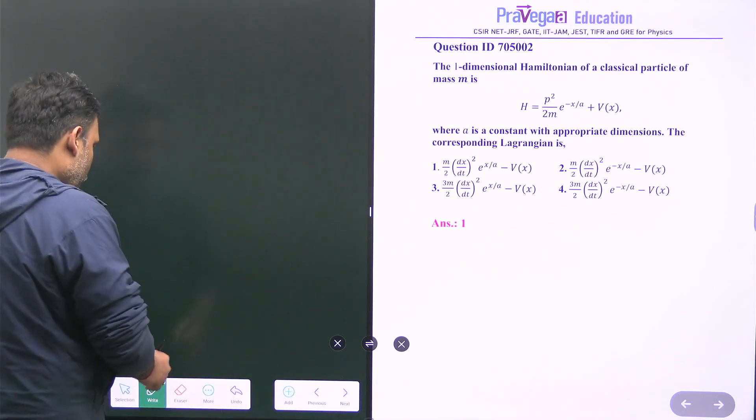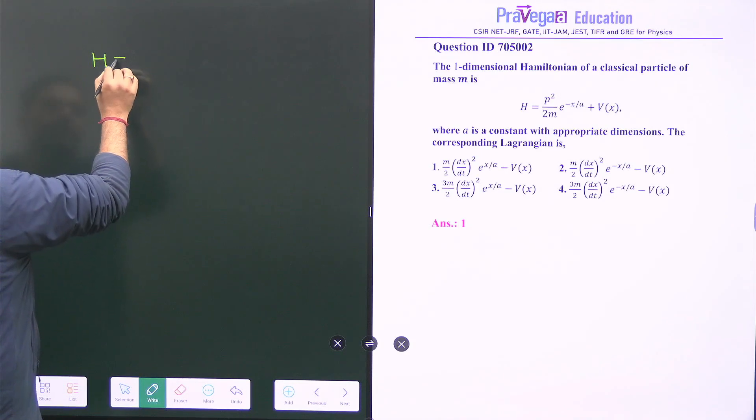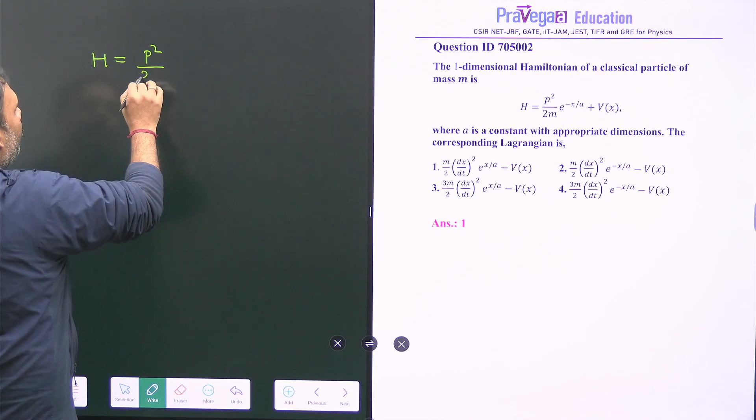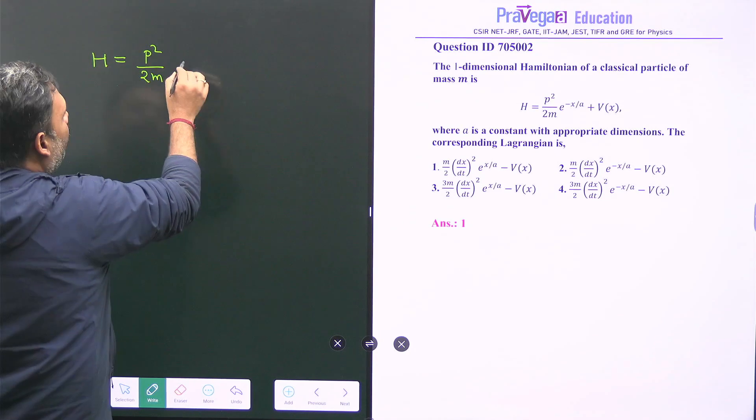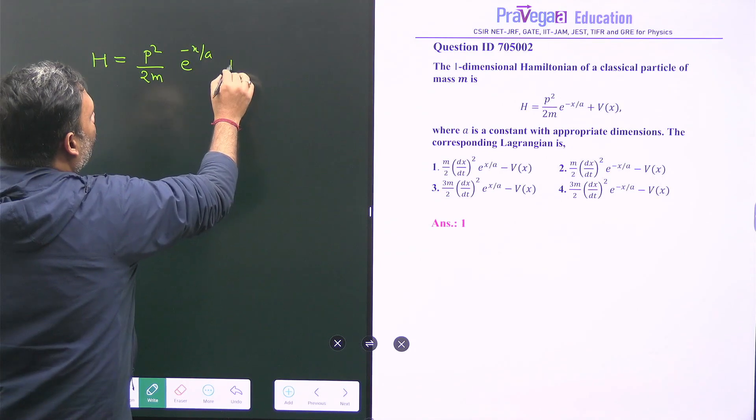So what is my Hamiltonian? My Hamiltonian is basically p squared upon 2m and e to the power minus x upon a plus v(x).